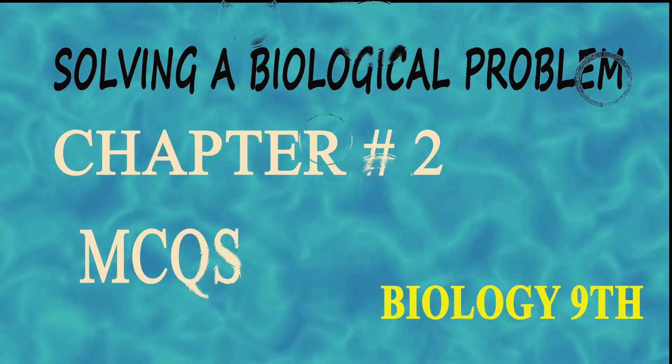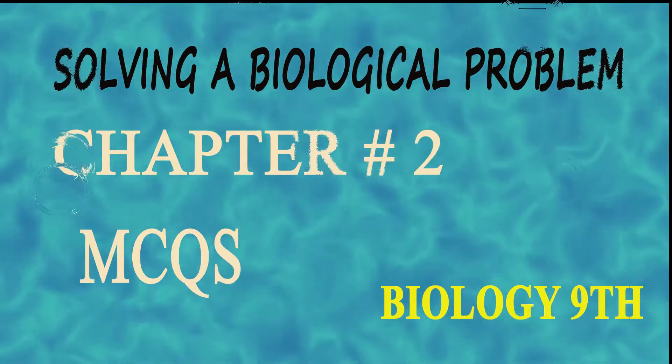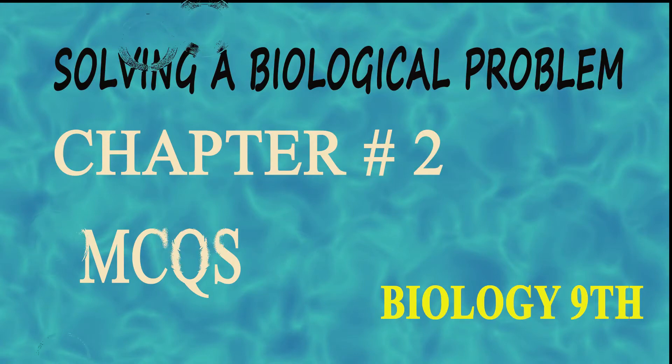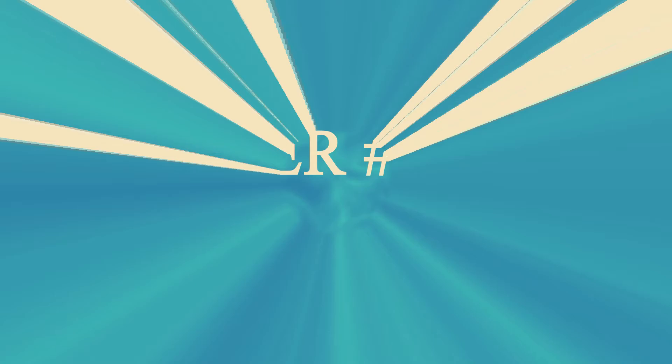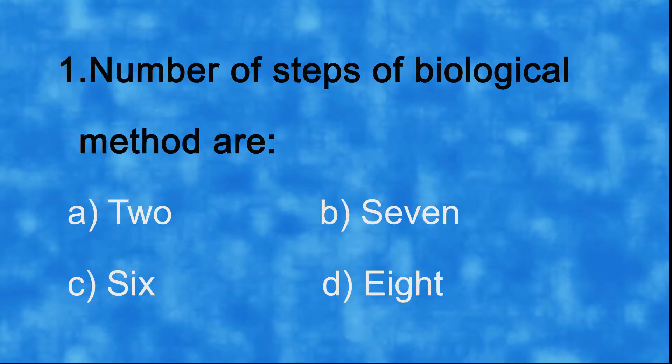Assalamu alaikum dear students, welcome to my science academy. Today we are in biology 9 class, chapter number 2, solving a biological problem. We will start MCQs practice. Let's start. Number one: number of steps of biological method are a) 2, b) 7, c) 6, d) 8.